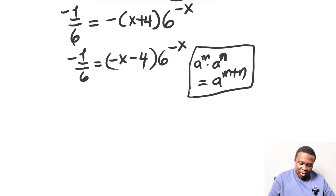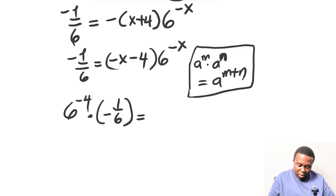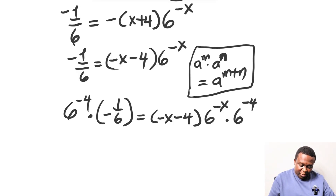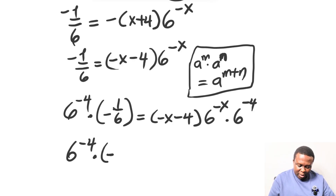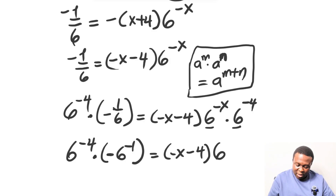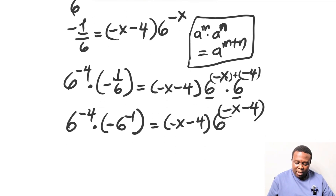So we multiply both sides by 6 raised to the power of minus 4. On the left we get minus 6 raised to the power of minus 4 times 1 over 6. We can rewrite 1 over 6 as 6 raised to the power of minus 1. On the right we have minus x minus 4 times 6 raised to the power of minus x, dotted by 6 raised to the power of minus 4. Adding the powers gives 6 raised to the power of minus x minus 4, so the base and the power now look the same.